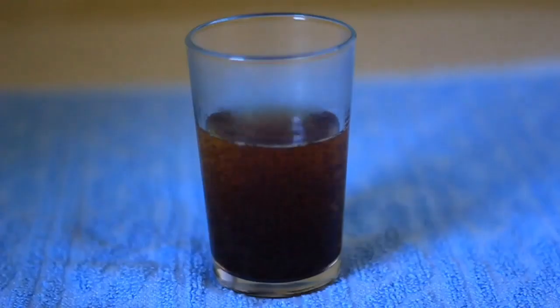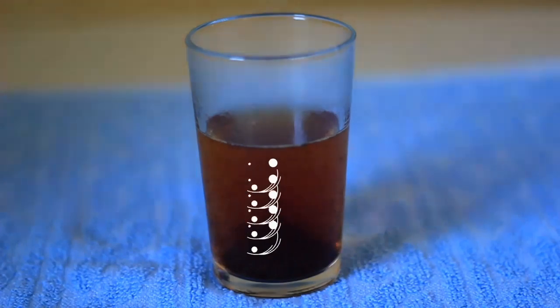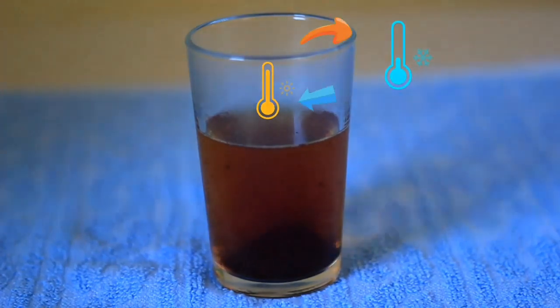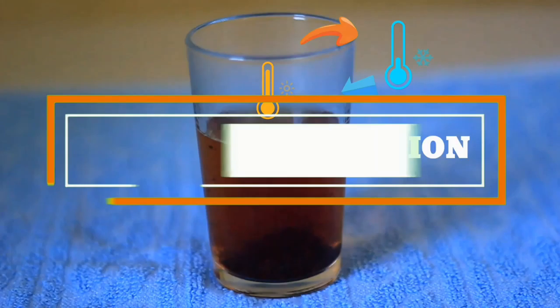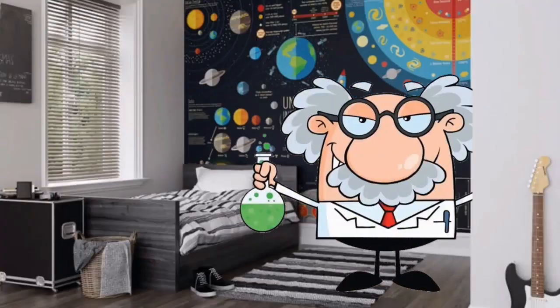And due to this movement, you feel the cup's outer surface hot. When the tea molecules move, they make their way to the surrounding air around the cup where they will transfer their heat, and that's what we call thermal convection.